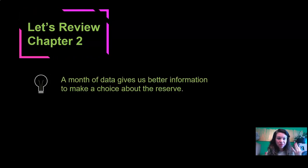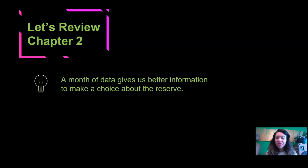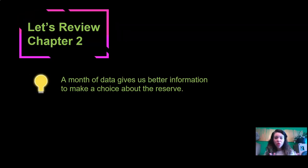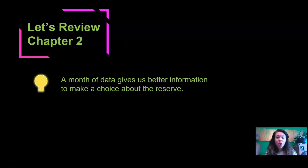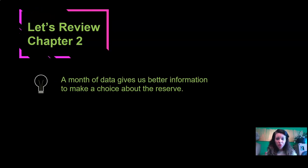Let's review what you learned in Chapter 2. I called Scientist Cynthia, and she gave me these three big ideas from Chapter 2. The first one is that a month of data gives us better information to make a choice about the reserve. Remember in Chapter 1 we looked at one day of data, and in Chapter 2 you looked at a whole month of data. A month of data gives us so much more to work with when we're making a choice for the orangutans.